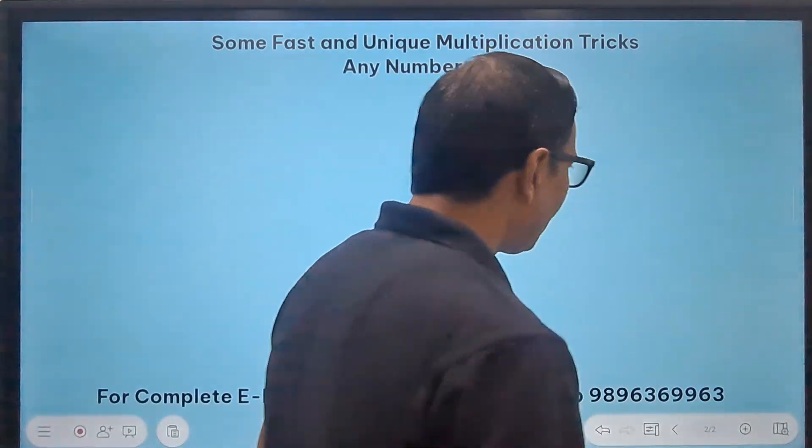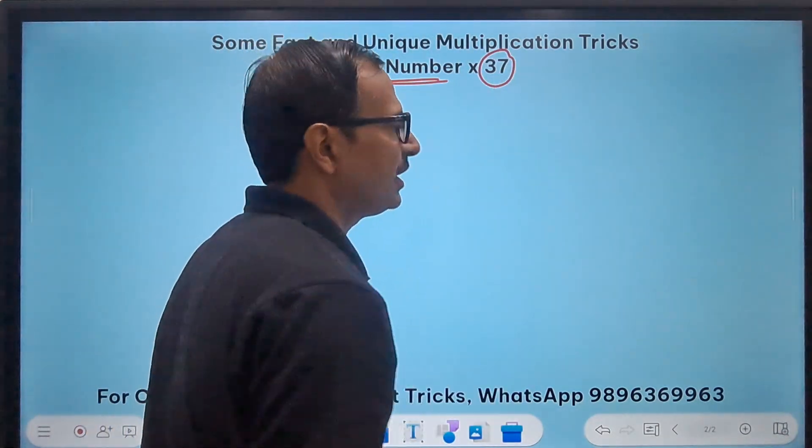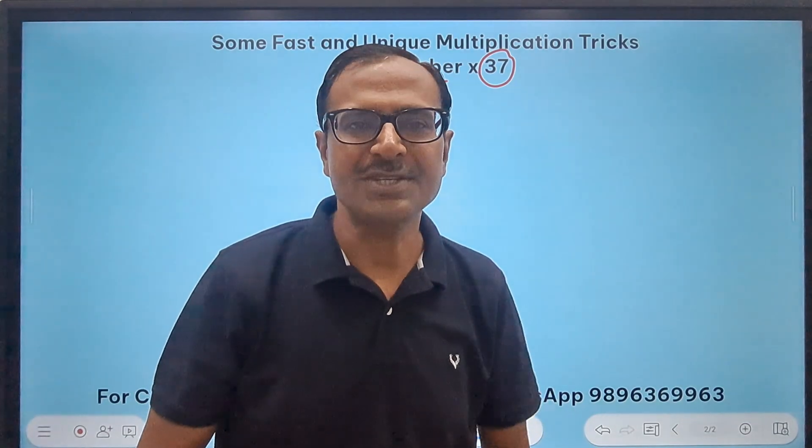Let's see another trick. Now here we have any number times a special two-digit number 37. Now why do I call 37 as a special number? I'll tell you just now.